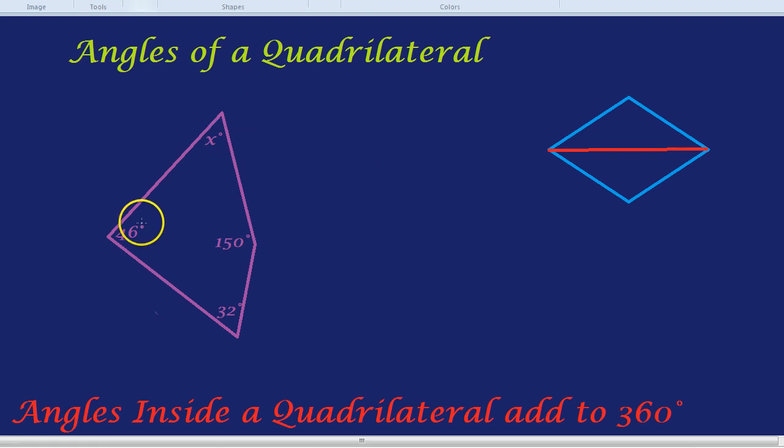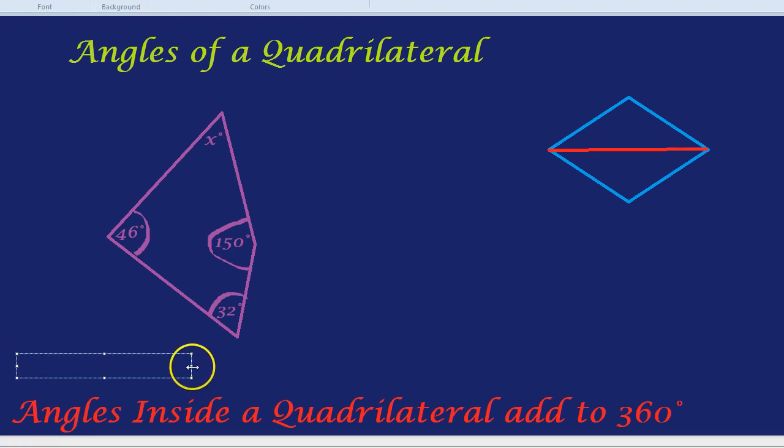How would we do that? The only way we can do this is if we realize that all four of the angles must add up to 360 degrees. So what we do is we add up the three angles we've got so far and see what's left over from 360 degrees. 46 plus 150 plus 32 would be 228.